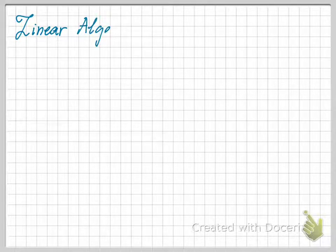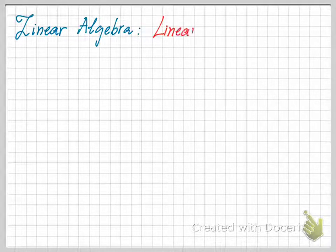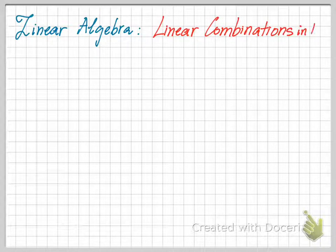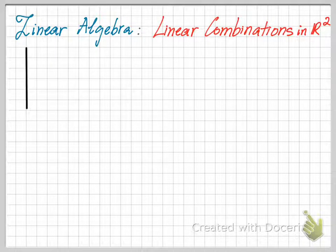This video explains linear combinations in space R². You can imagine space R² as the xy coordinate system. It's a two-dimensional space.